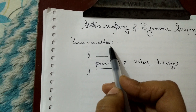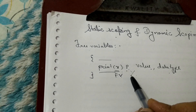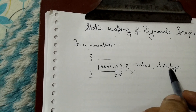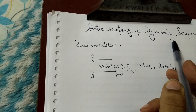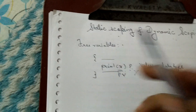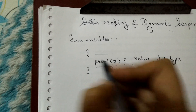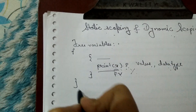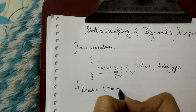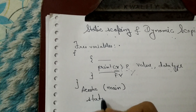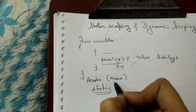Free variables are variables which are used in a scope but not declared in that scope. We have to find the value and data type using either static scoping or dynamic scoping. In static scoping, X is a free variable and we look for the value of X in its ancestor block. The ancestor block is nothing but the main block — so in static scoping we look for the value of a free variable in the main function.